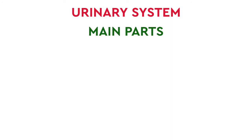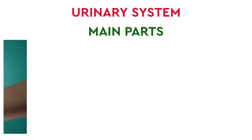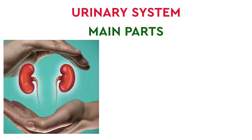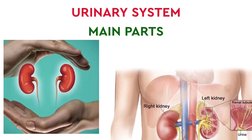The main parts of the urinary system. The first part is the kidney, then the renal pelvis.